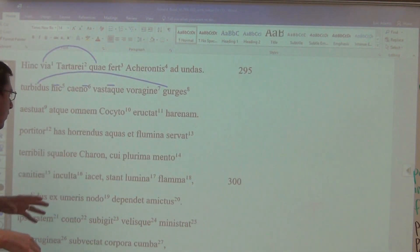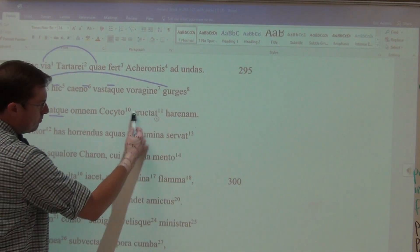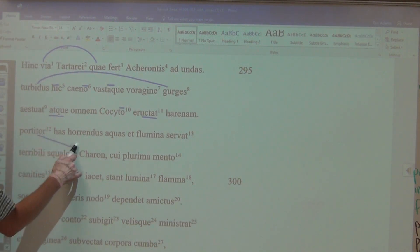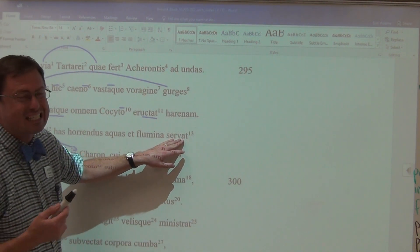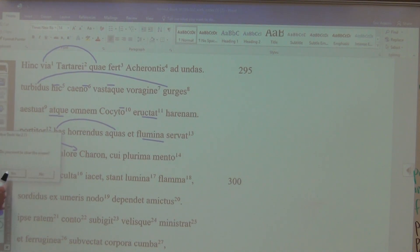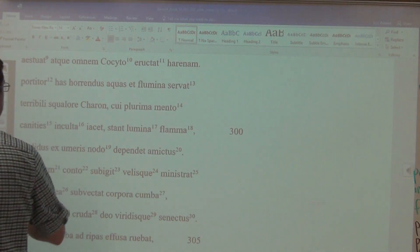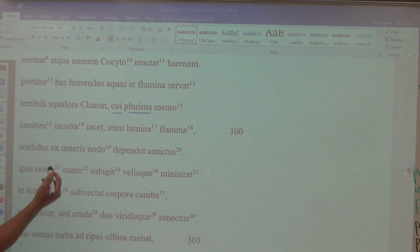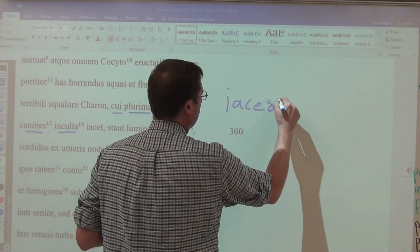It describes the place that is this confluence of the rivers, Acheron, Cocytus, Styx, to obviously cause quite a bit of a disturbance with the water. And it spits out, it vomits out all the sand from Cocytus. The horrendous boatman, the portator, Charon, he watches over, he protects, he preserves these waters and rivers with his terrible squalor.